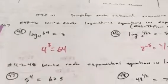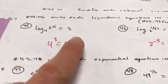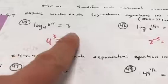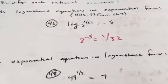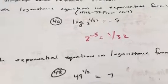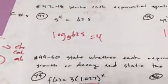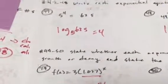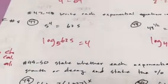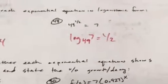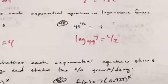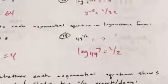Moving on to number 45 and 46 — write in exponential form: 4 is the base, 3 is the exponent, 64 is the answer; 2 is the base, negative 5 is the exponent, 1/32 is the answer. Going backwards to logarithmic form: log base 5 of 625 equals 4; log base 49 of 7 equals 1/2.